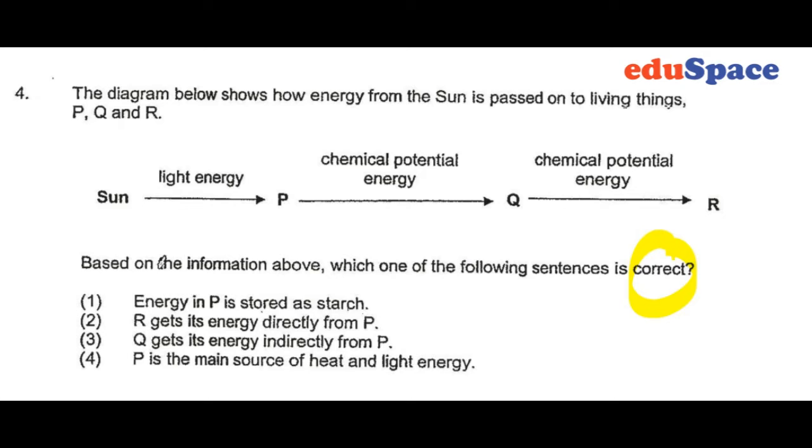In question 4, we have a diagram showing how energy from the sun is passed on to living things. The sun provides light energy, which is taken in by plants through photosynthesis.